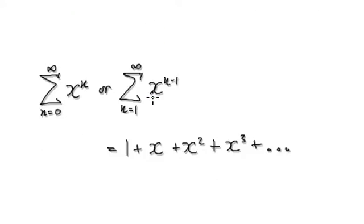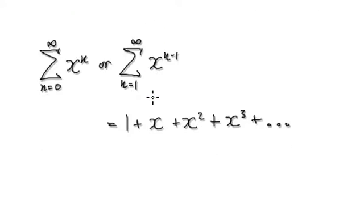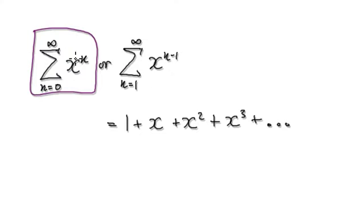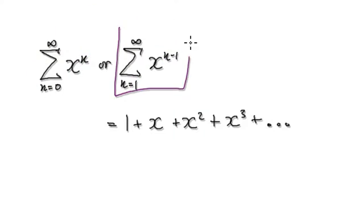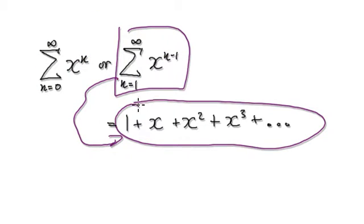Before we do that, let's consider something simple that we've seen in the past. This is a geometric series. Here you start at n equals 0, and then this would be n. And here you start at 1, but then it would be n minus 1. So these two are equivalent, and this will generate all these terms.